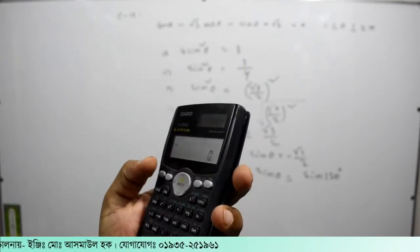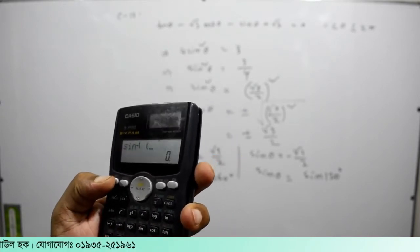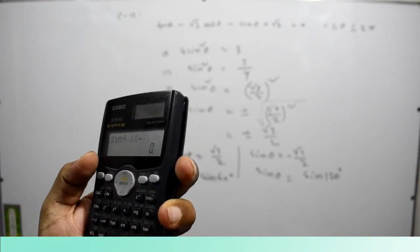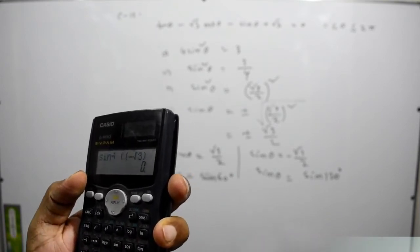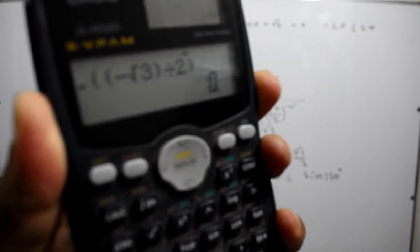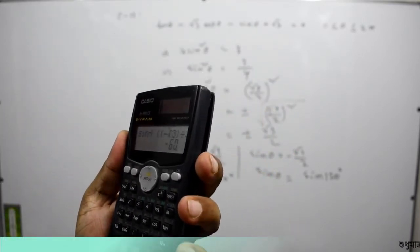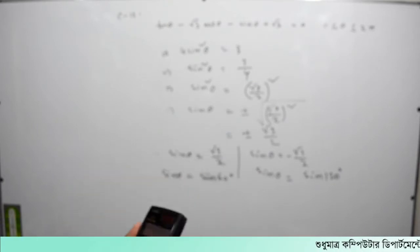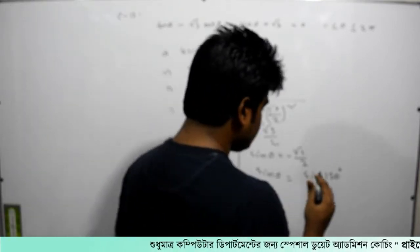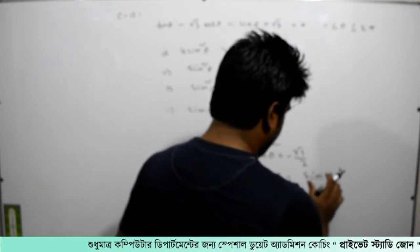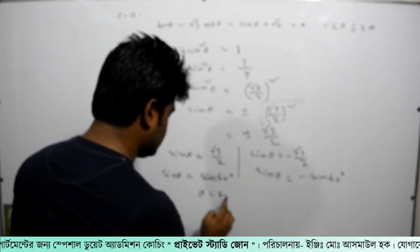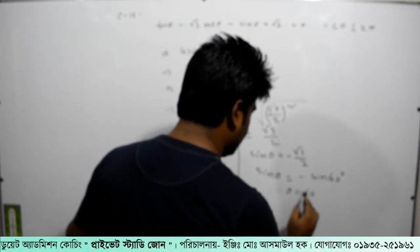This gives us the value of sin inverse. The value of sin inverse is minus root 3. We get theta equal to 60 degrees and also theta equal to minus 60 degrees from the calculation.